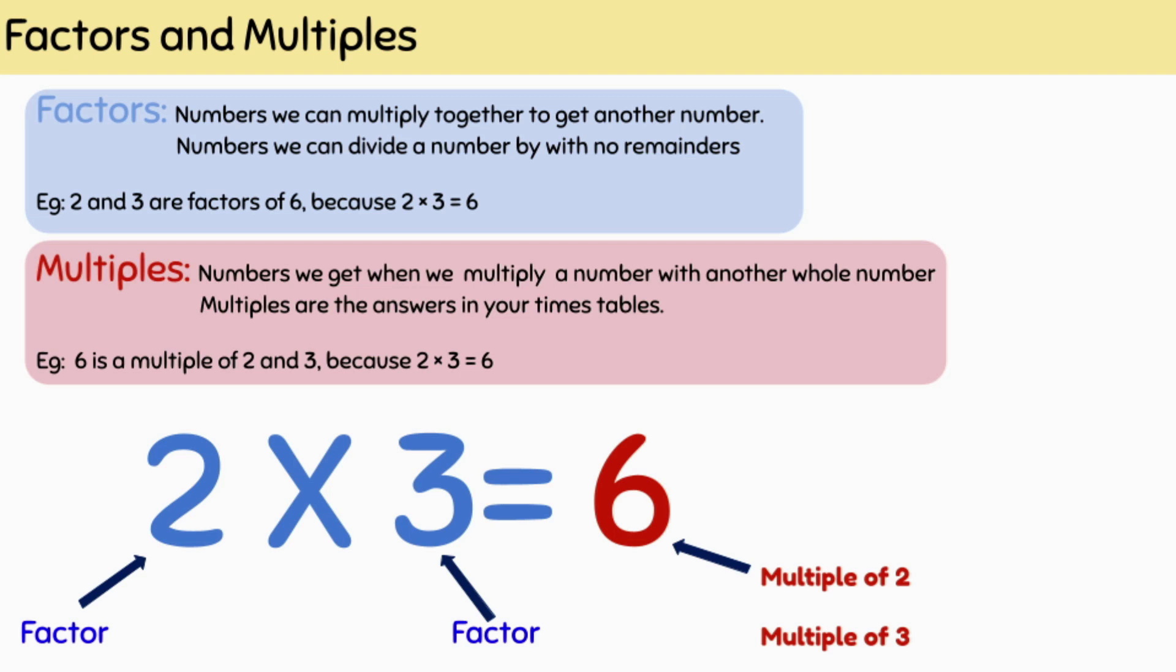Factors are the two numbers we multiply together to give another number. Factors are also the numbers that we use to divide another number by, leaving no remainders.